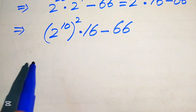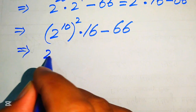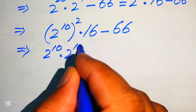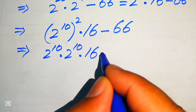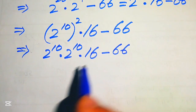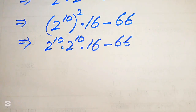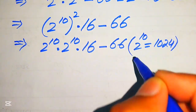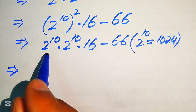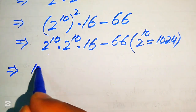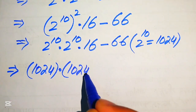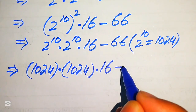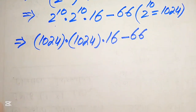We know that 2 to the power of 10 squared means multiplying 2 to the power of 10 by itself, then multiplying by 16 and subtracting 66. Our next target is to find the value of 2 to the power of 10, which is 1024. So we replace 2 to the power of 10 with 1024 and write the expression as 1024 multiplied by 1024, multiplied by 16, minus 66.